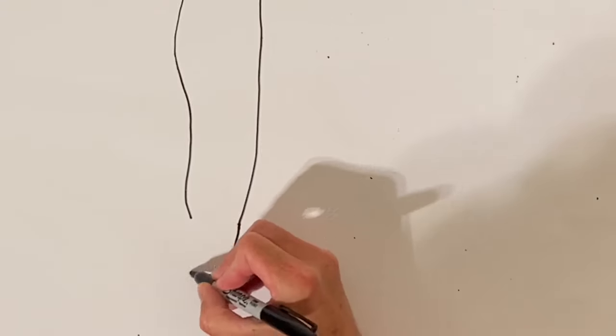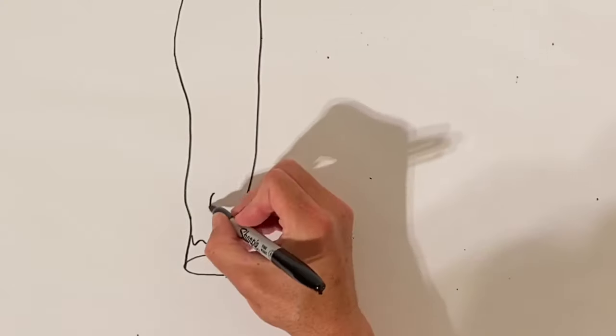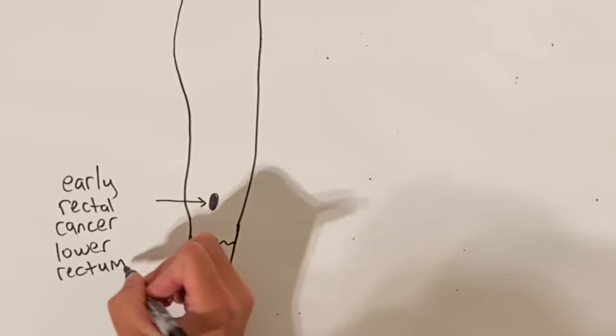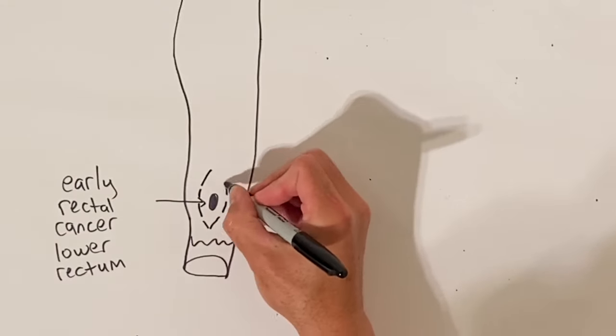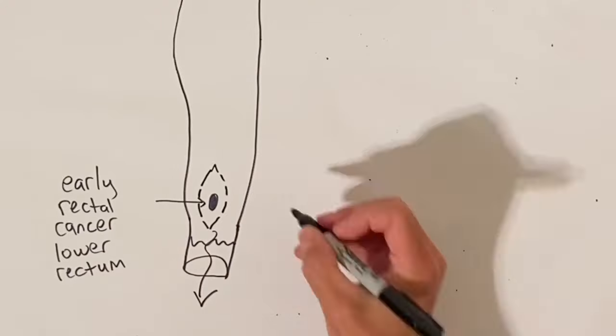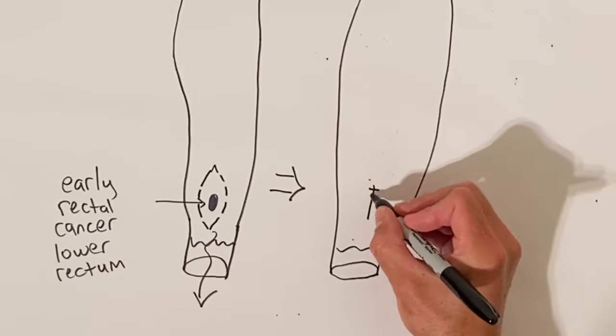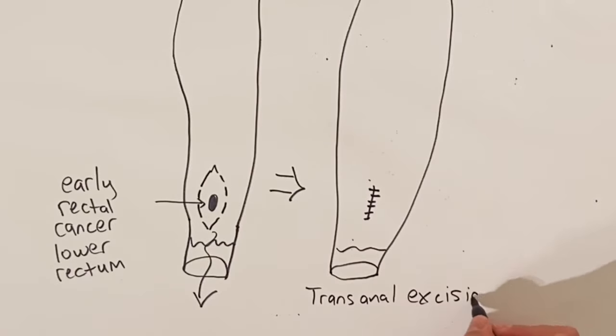Sometimes, if a cancer is very small and early and has not grown into the wall of the muscle of the rectum and is in the lower third of the rectum, we may be able to remove it from the anal opening just by taking out a part of the wall of the rectum and stitching it shut. This is called a transanal excision. This is only for very small, very early rectal cancer. It is sparingly used since we cannot check lymph nodes with this technique.